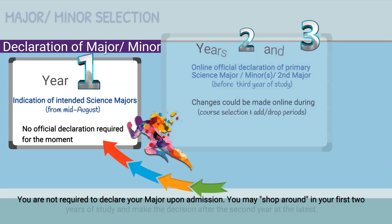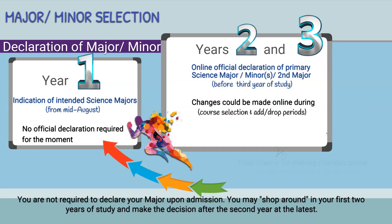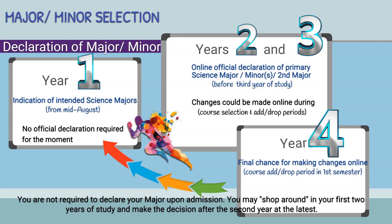You are not required to declare your major upon admission. You may shop around in your first two years and make a decision after the second year at the latest.